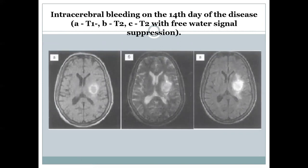Here you can also see the 14th day of the disease for the same person, in different MRI types with different signal characteristics. It is the same person, the same location — a formed area of stroke, and this represents the recovering phase.